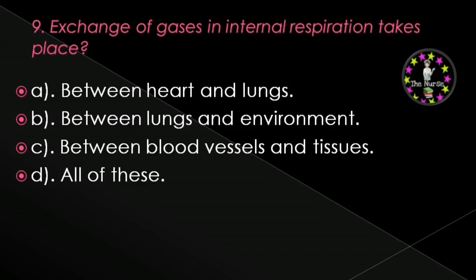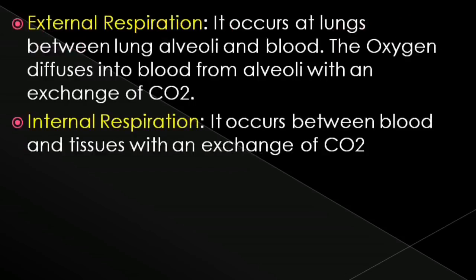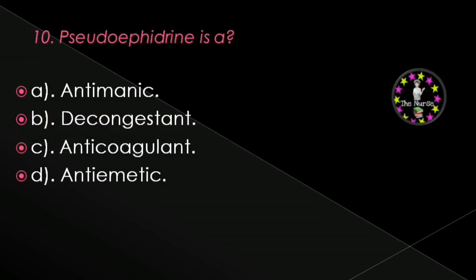Next question: Exchange of gases in internal respiration takes place — between heart and lungs, between lungs and environment, between blood vessels and tissues, or all of these? Correct answer is between blood vessels and tissues. External respiration occurs at the lungs between lung alveoli and blood, where oxygen diffuses into blood from alveoli with an exchange of carbon dioxide. Internal respiration occurs between blood and tissues.